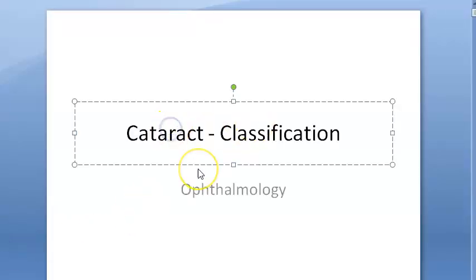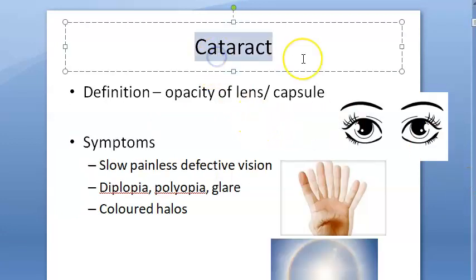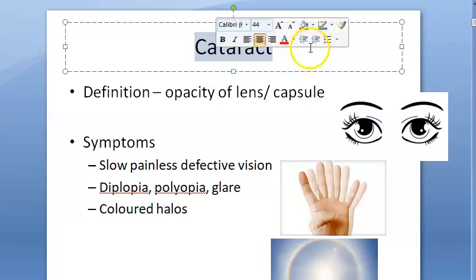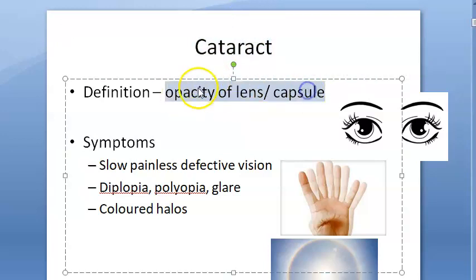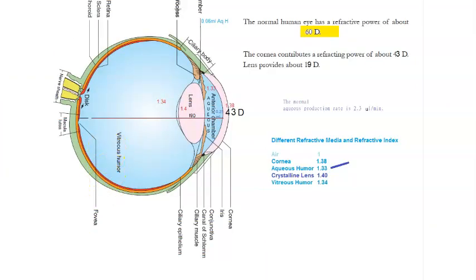In this video let us look at cataract and mainly its classification. Cataract actually means waterfall. It is the opacity of the lens or its capsule. The lens is inside the eye and the capsule is outside it. If either of these develops some opacity, it will be called cataract.